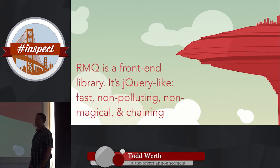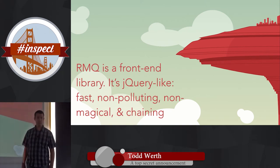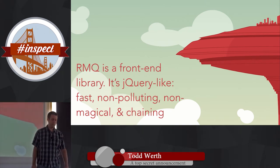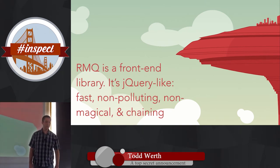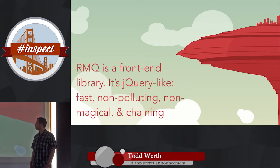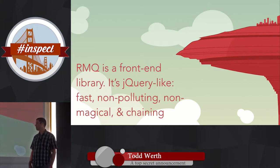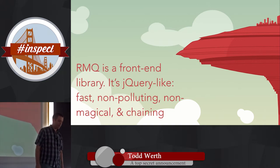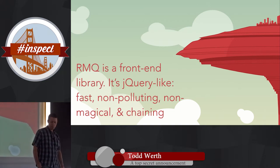RMQ is a front-end library. It's like jQuery — it chains, it's non-polluting, it's not magical as much as possible, and it's fast. It's designed to be fast and it's going to be faster later.